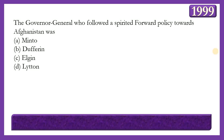Next question: Which governor-general followed a spirited forward policy towards the Afghan wars? Options: Minto, Dufferin, Elgin, or Lytton. The answer is option D — Lytton. The English force was defeated in the Anglo-Afghan War of 1839-1842, and Lord Ellenborough followed a forward policy towards Afghanistan to regain the lost prestige. Later, Lord Lytton carried forward this policy.